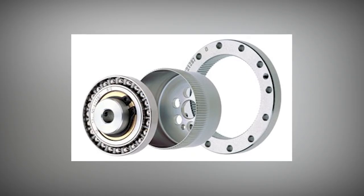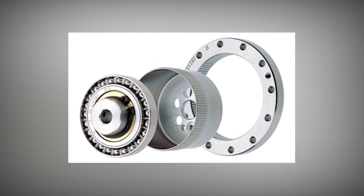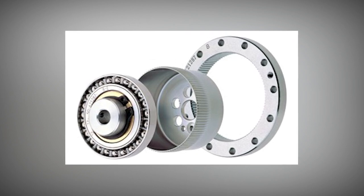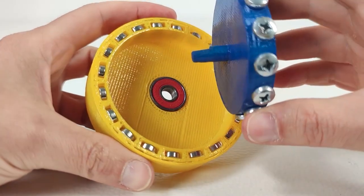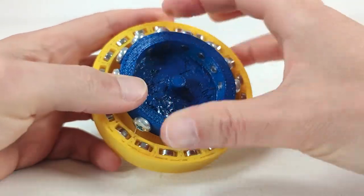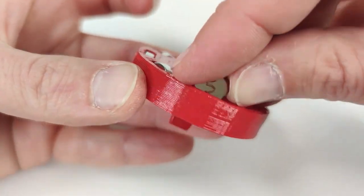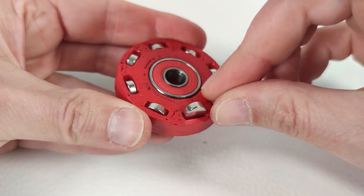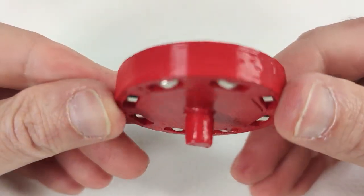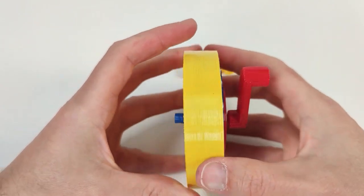It is mechanically similar to a strain wave gear and permits high gear ratios and comparable torque. Instead of a flexible spline, this sort of gear utilizes the flexibility of the magnetic field. At full load, torque densities comparable to mechanical gears can be achieved with efficiencies of 99% or greater.